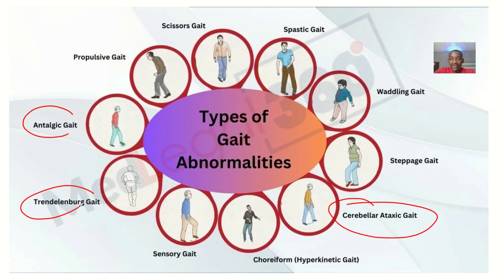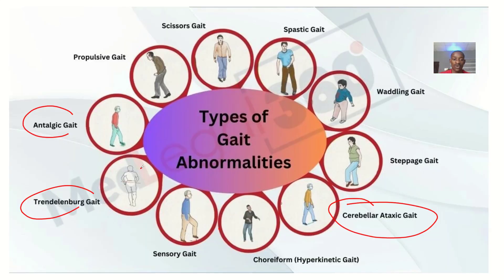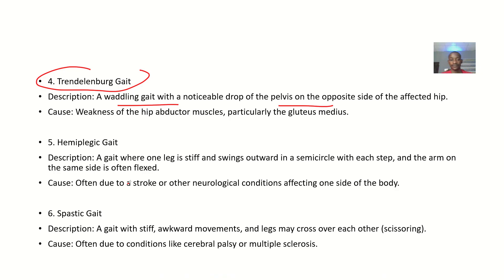Looking at the Trendelenburg gait — one hip is higher than the other. This is a waddling gait with a noticeable drop of the pelvis on the opposite side of the affected hip. As you walk, one side of the pelvis is higher than the other, so the hip is kind of twisted. It's due to weakness of the hip abductor muscles, particularly the gluteus medius.